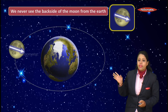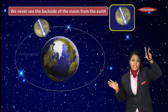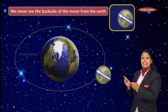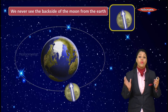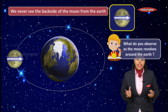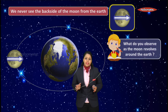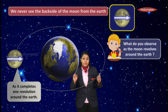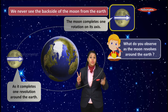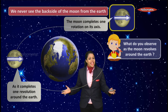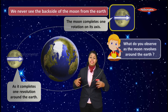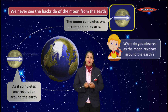As the Moon revolves around the Earth, it also rotates around its own axis, but only one side always faces the Earth. As the Moon completes one revolution around the Earth, it also completes exactly one complete rotation about its own axis. That is why we only see one side of the Moon and never see its back side.